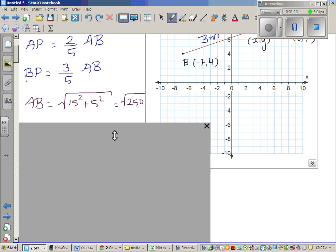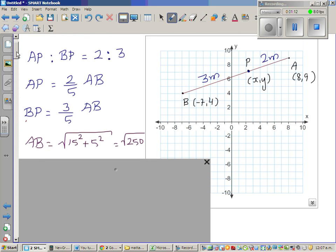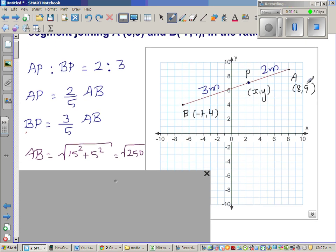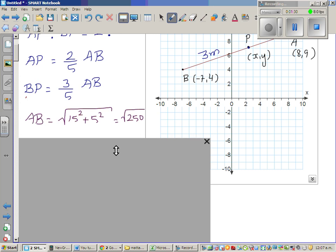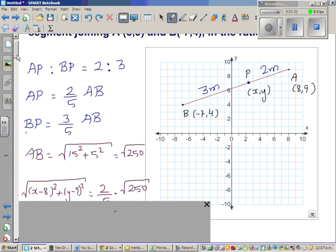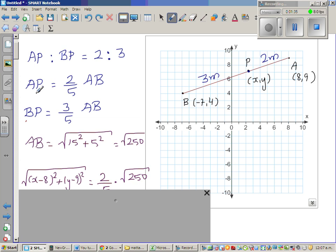First is AB using distance formula, is 8 take away negative 7, that is 8 plus 7, which is 15 squared, and 9 take away 4 is 5 squared. So this is 225 plus 25 is square root of 250. So I'm using the distance formula. So AP is 2/5 of AB, and that's what I've done.